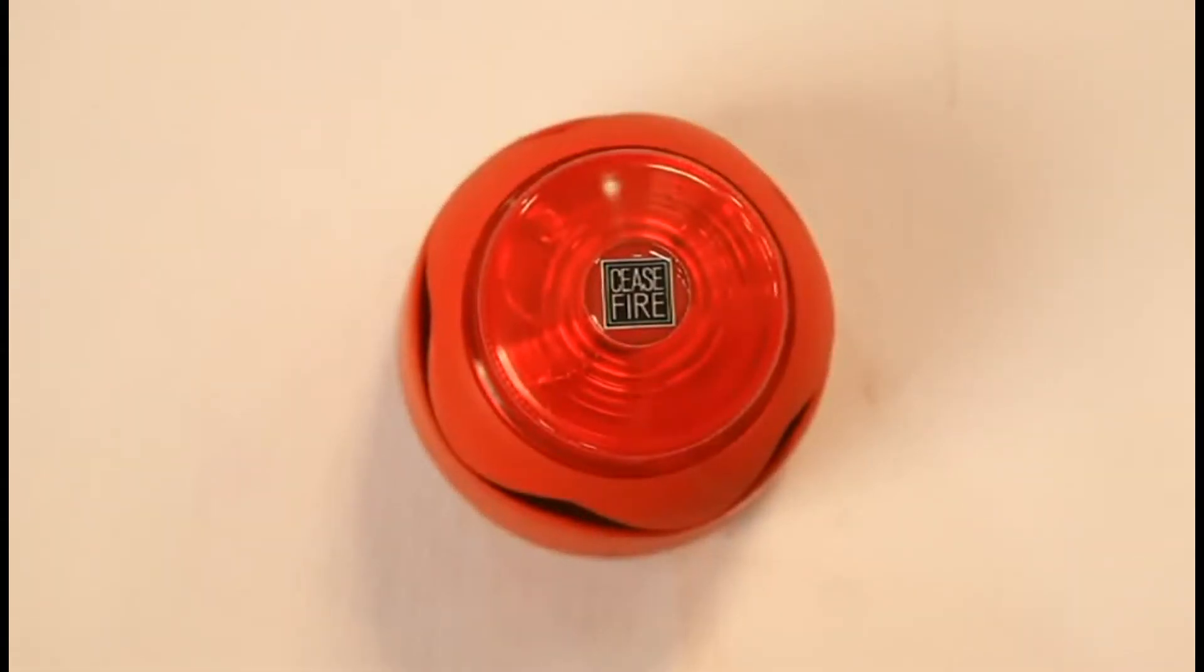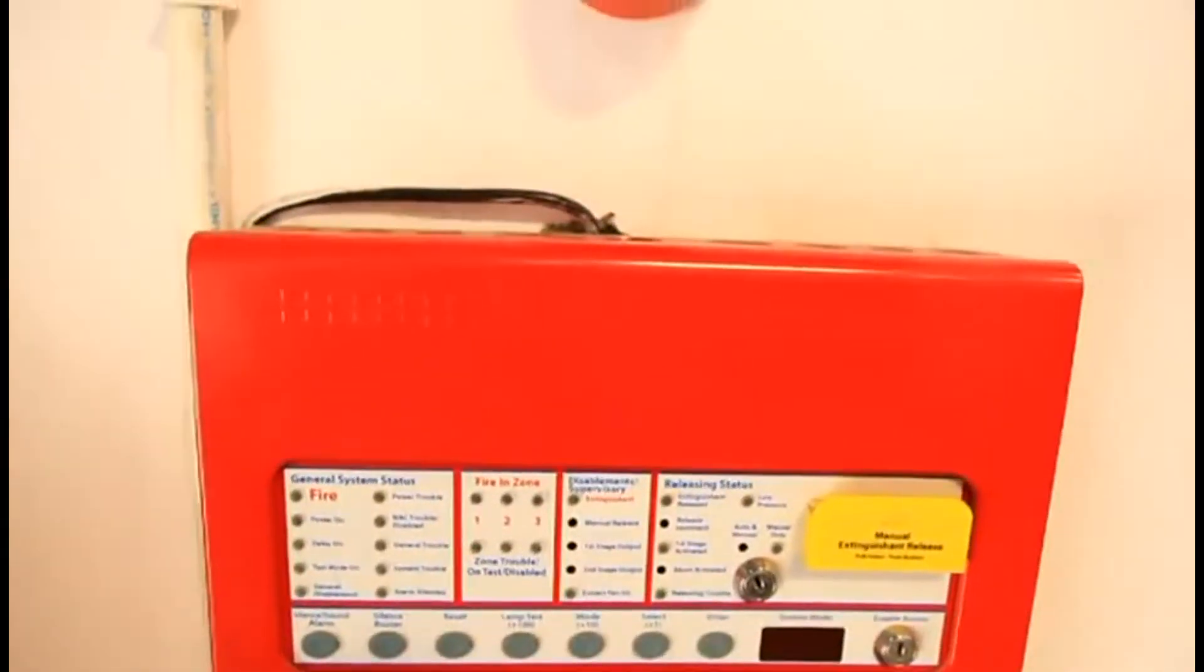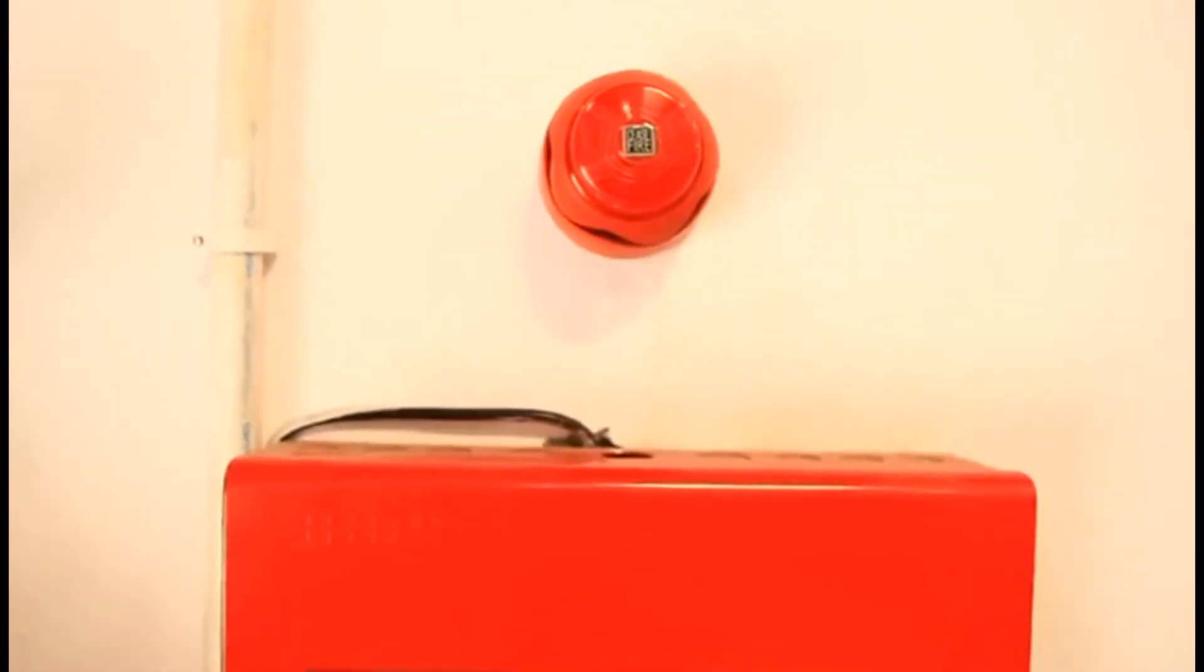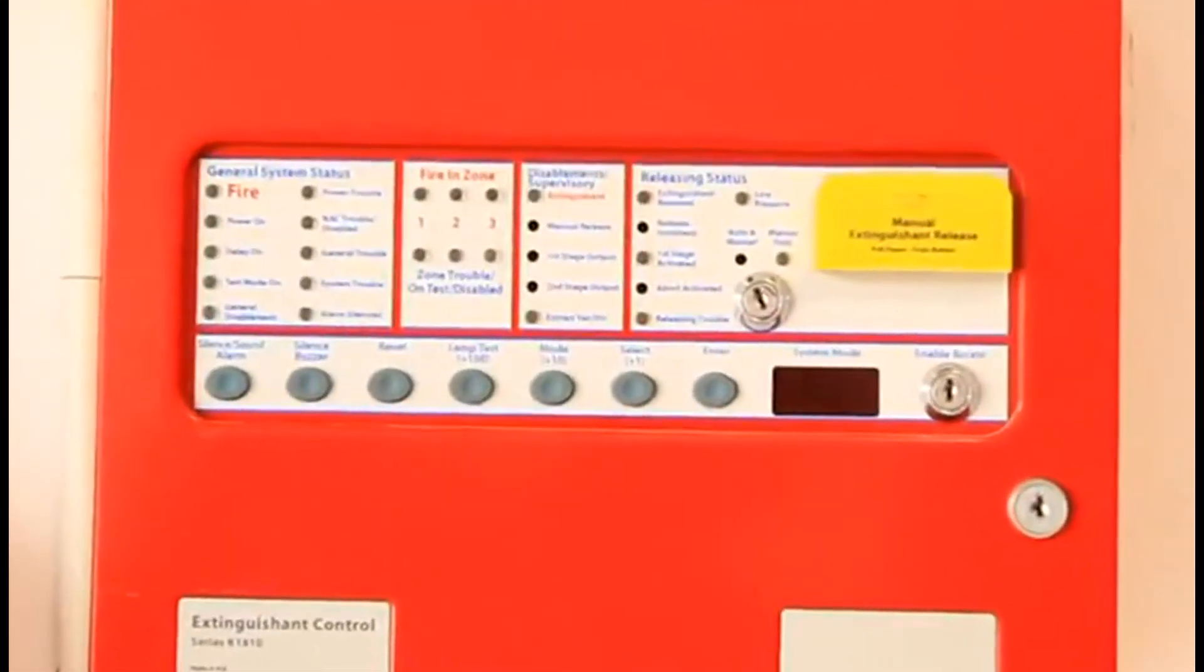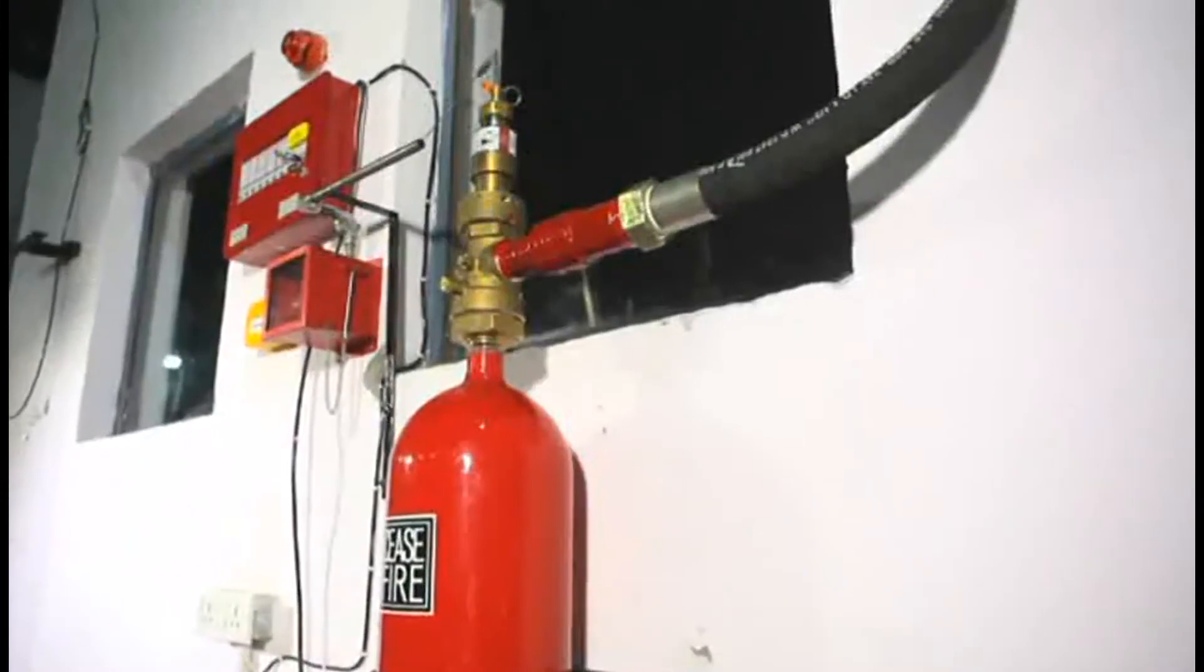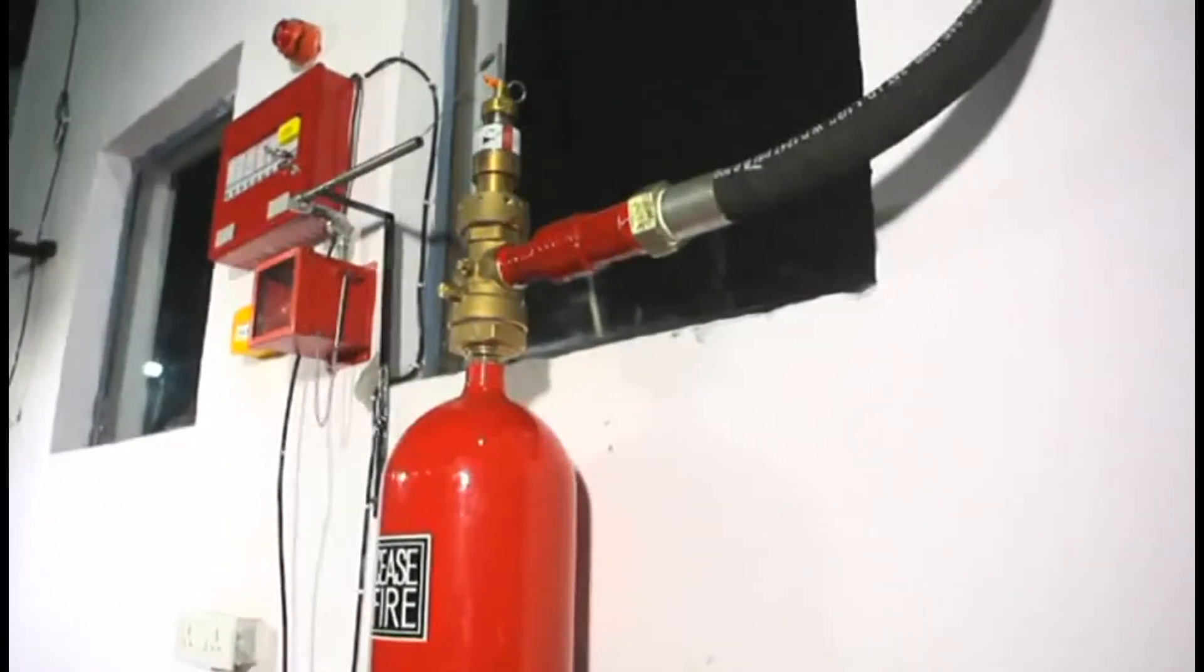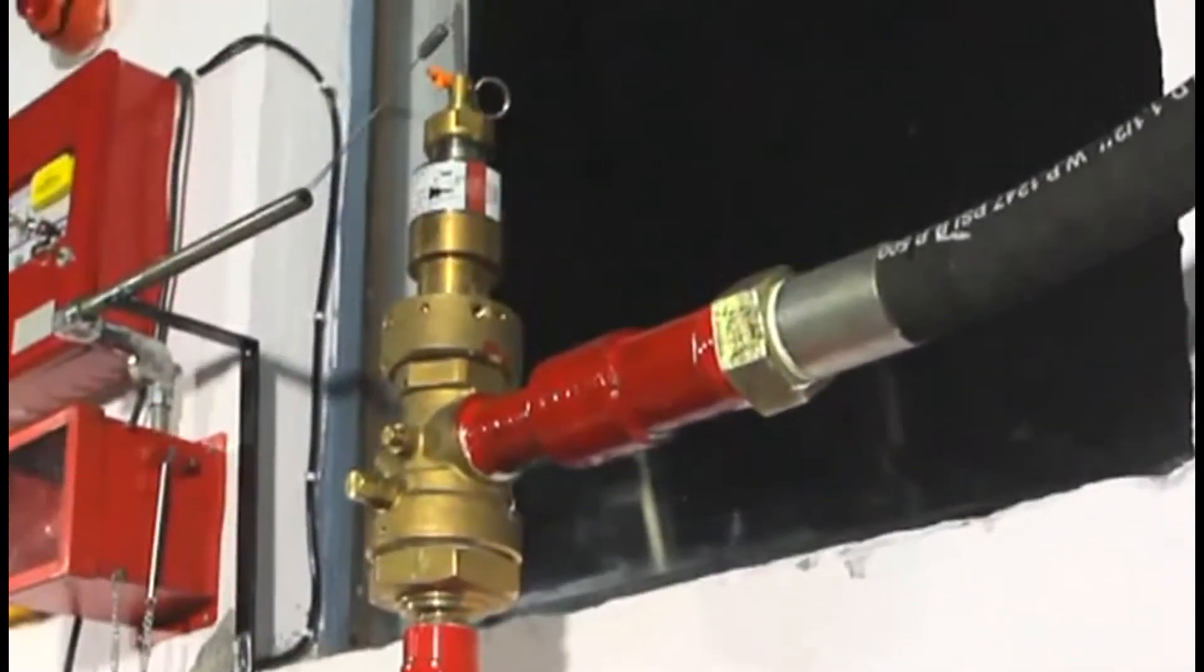In addition, an audible alarm alerts personnel in the area to the danger giving them time to clear the space. The control panel which is here gives the signal for release of the extinguishing agent from the cylinder. It can also be manually activated by simply pulling the lever.